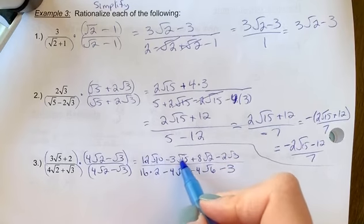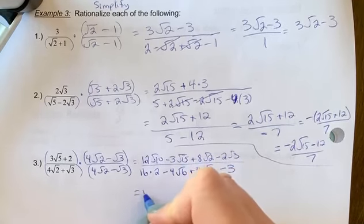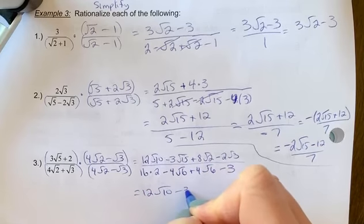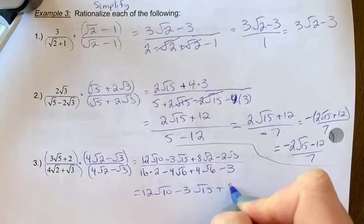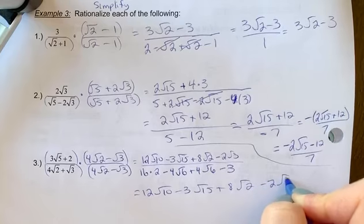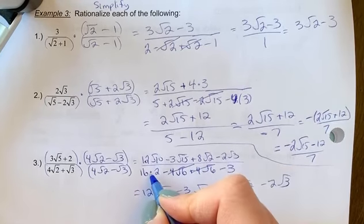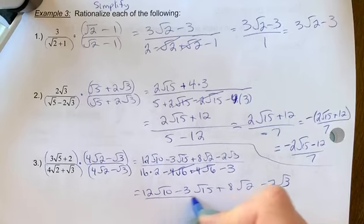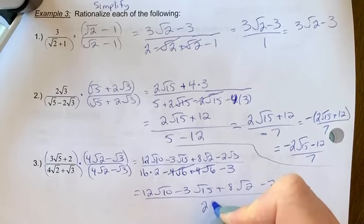Looking at the numerator, there's nothing I can combine or simplify, so we're just going to rewrite that out. And then these will cancel, then we're going to have 32 minus 3, so we have 29.